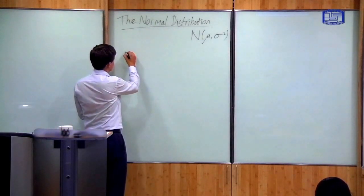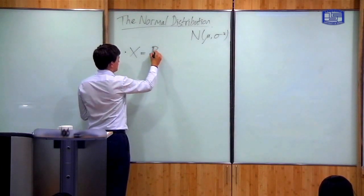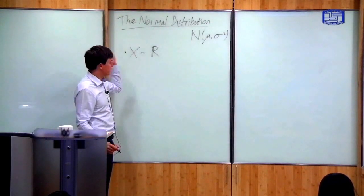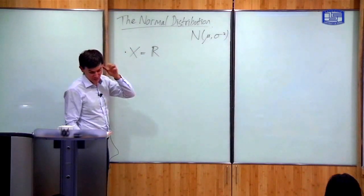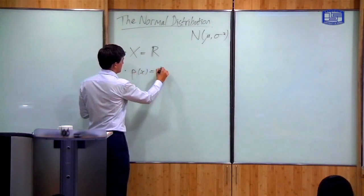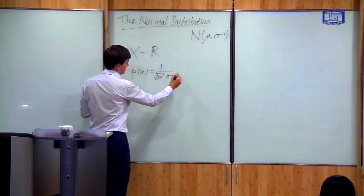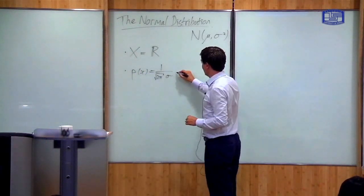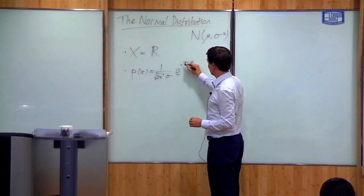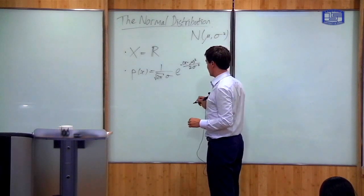This is a continuous probability distribution. The space of possible results is the whole of the real line, so the variable can be anything from minus infinity to plus infinity. The probability density P(x) is defined as follows — I'll define it and then explain why: 1 over √(2π) σ times the exponential of minus (x − μ)² over 2σ².